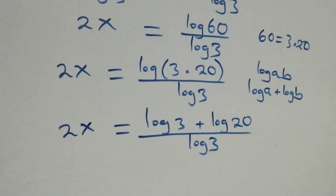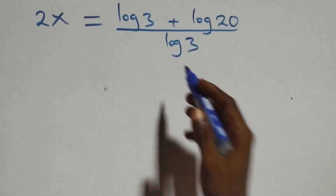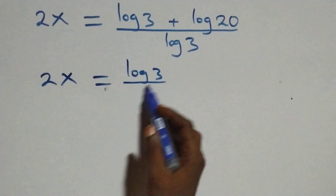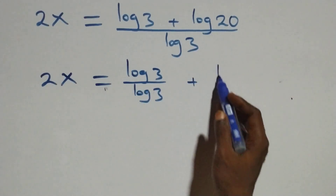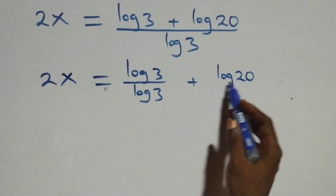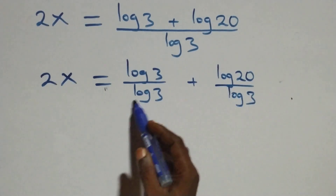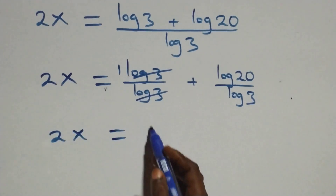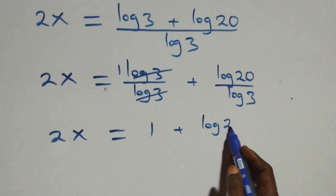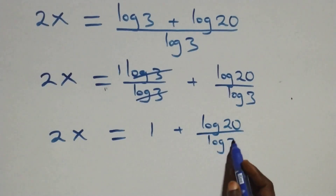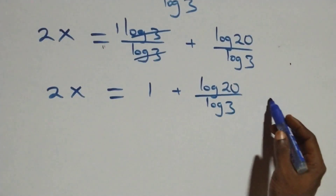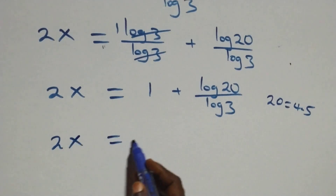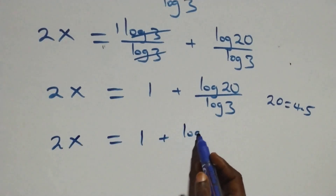We now separate this into two fractions: two x equals log three over log three plus log twenty over log three. Log three cancels and we have one left, so two x equals one plus log twenty over log three. We can also write twenty as four times five.